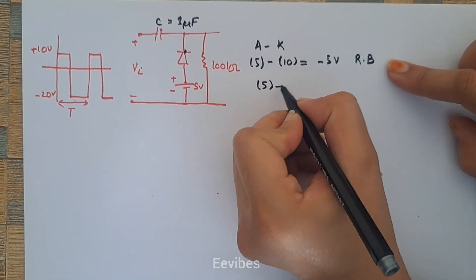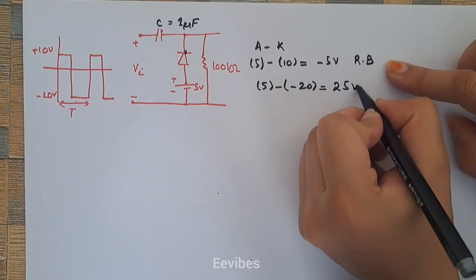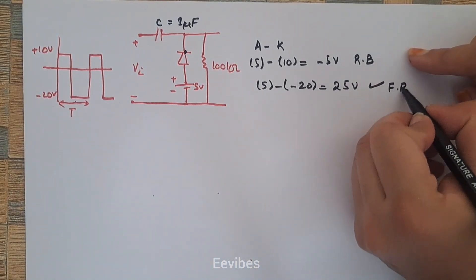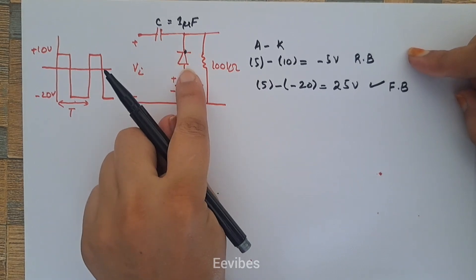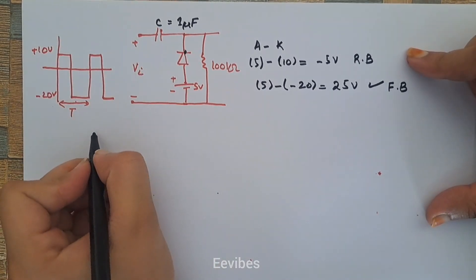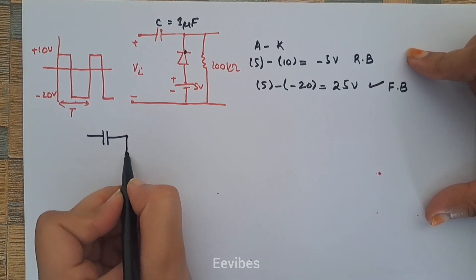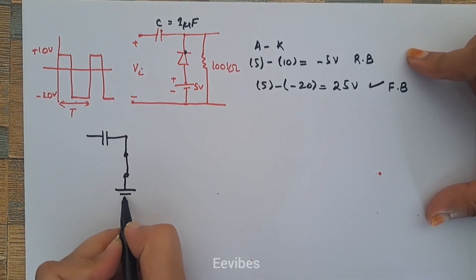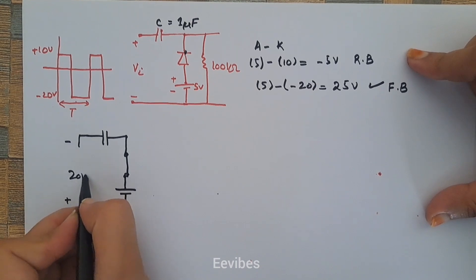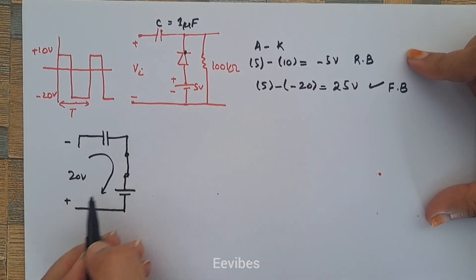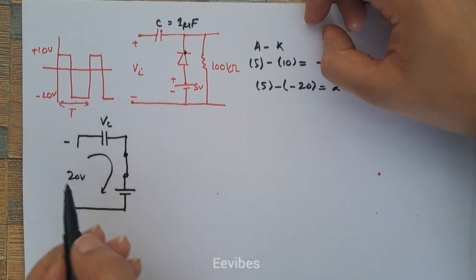During the negative cycle, the anode is at 5 volts while the cathode is at minus 20 volts, so the anode-to-cathode potential will be equal to plus 25 volts — positive — and the diode will be forward biased. When the diode is forward biased, it will be replaced with a short circuit and the current path can be defined. With the diode shorted and the plus 5 volt battery connected, the capacitor will charge to its peak voltage.